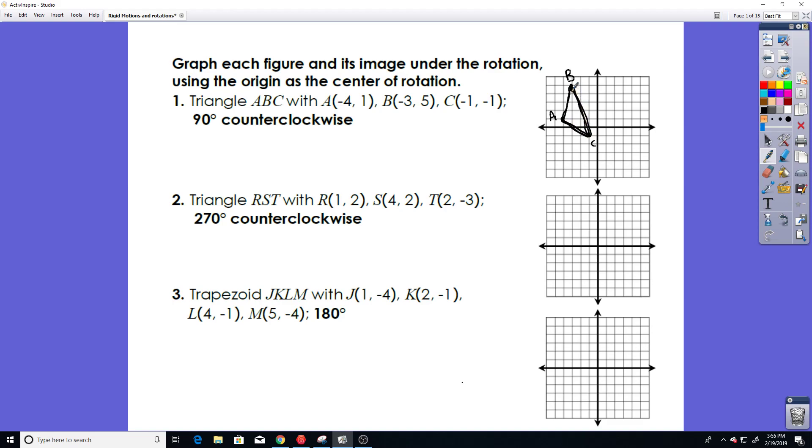So, what is our rule for a 90 degree rotation? Well, it goes like this. If we have some coordinate (x, y), then after a 90 degree rotation, the coordinate will be transformed into (-y, x). So, what does that look like?